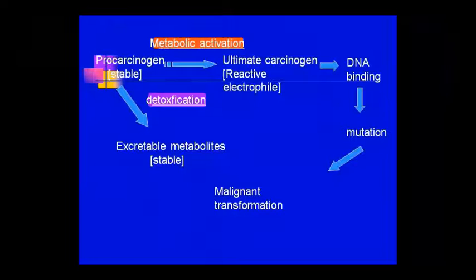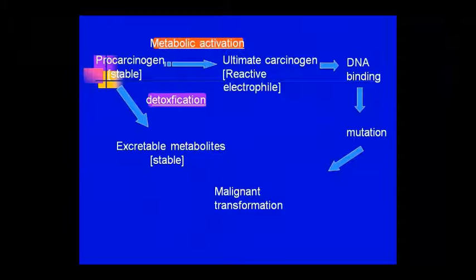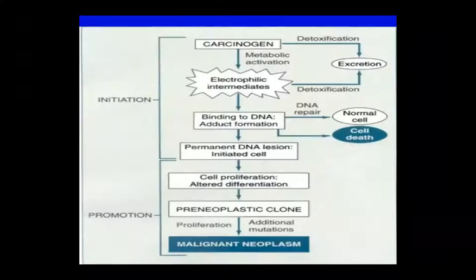These are two types of mechanisms. If the pro-carcinogen is activated, then it will become carcinogen and cause mutation. If it is detoxified, then it will be excreted out. So these are the two fates of a pro-carcinogen.